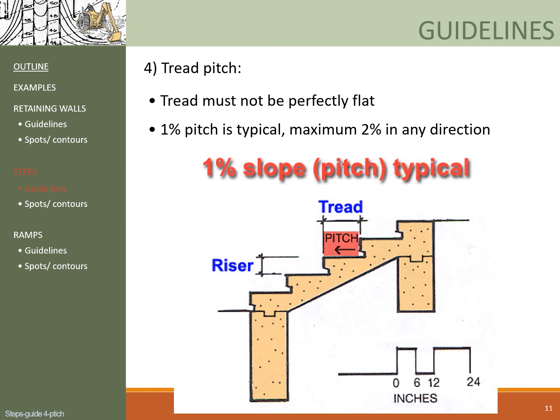The fourth guideline concerns the pitch of the tread. The treads need to drain as well — think about the icy winter in State College. If steps don't drain, stepping up and down can be very dangerous. Typically a 1% slope is designed to ensure that water runs off, but you cannot exceed the maximum allowable slope of 2% in any direction on a step.